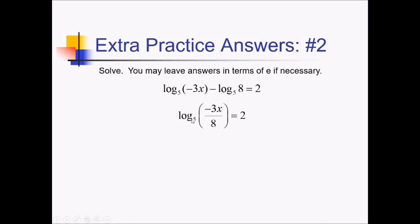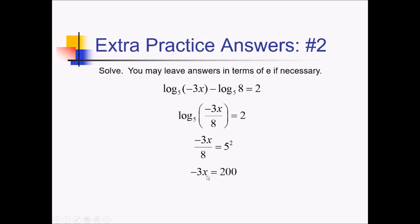Now to get rid of log base 5, I'm going to raise 5 to both sides. That cancels out my log on the left, leaving me with just negative 3x over 8. On the right side, I've got 5 to the power of 2. Now let's just solve for x — this is really 25 on the right side. Multiply by 8, we've got 200 over there. And then dividing by negative 3...